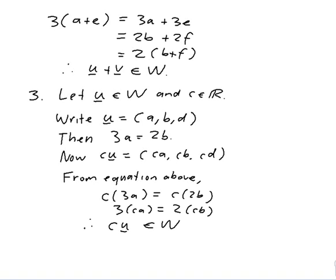So since 1, 2 and 3 are all true, w is a subspace. And it's got 3 coordinates for each of its vectors. So it's of r3.